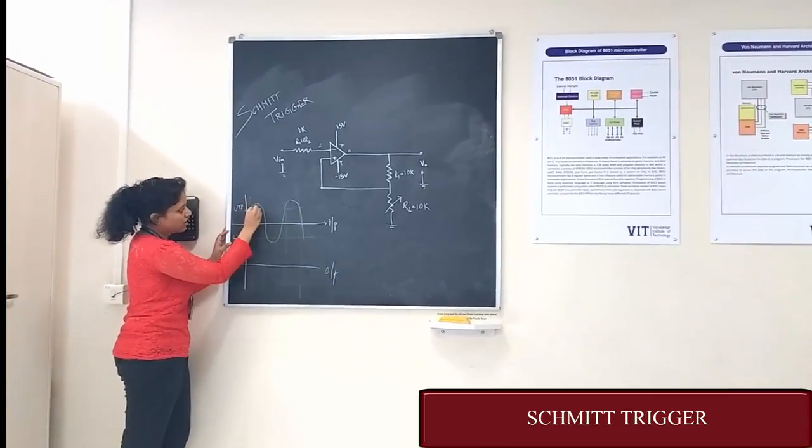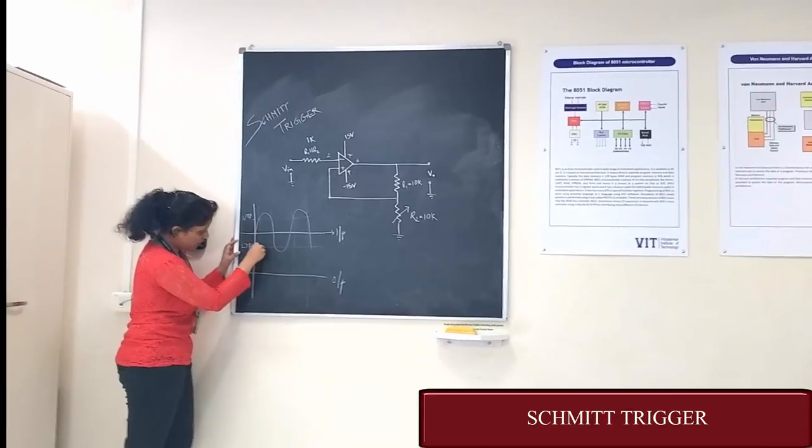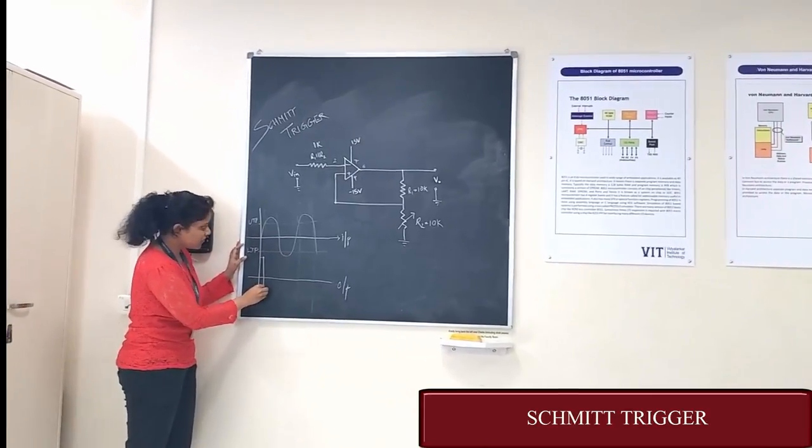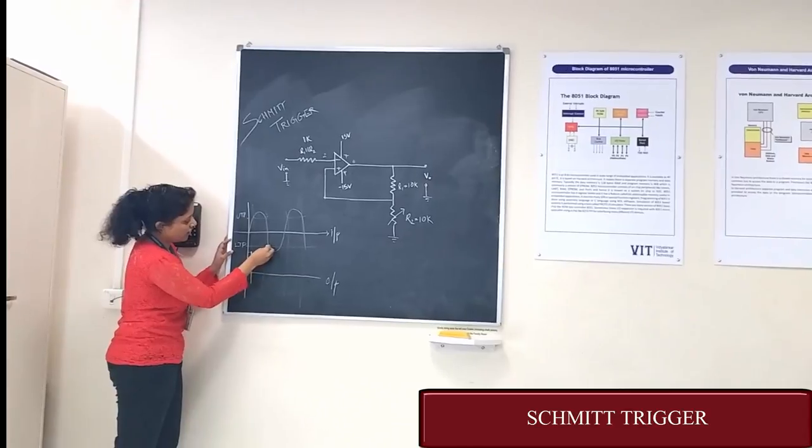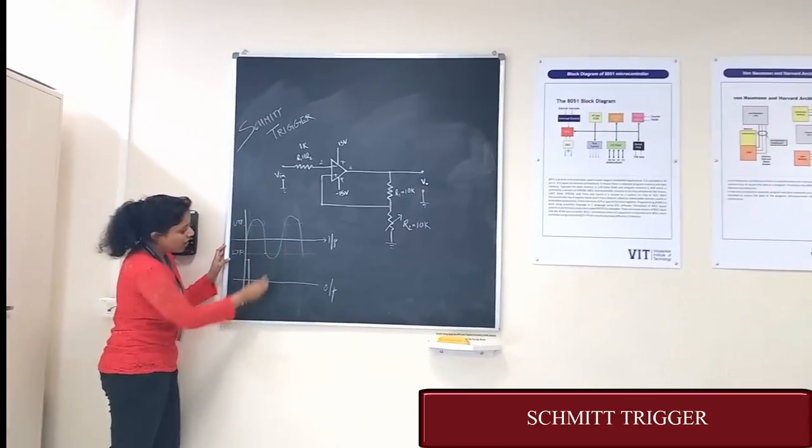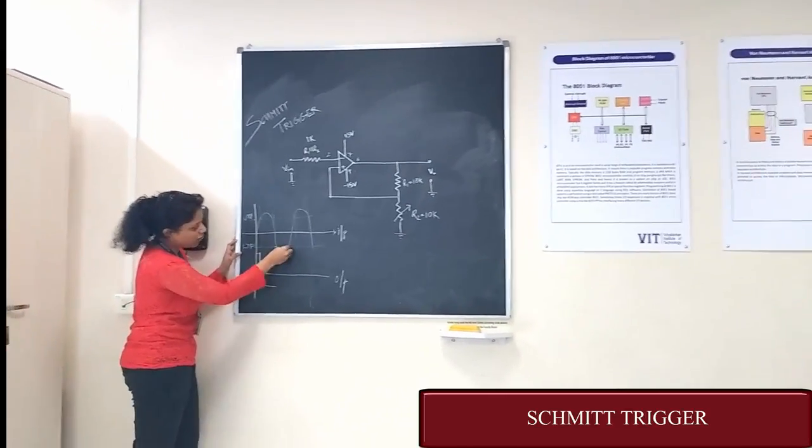If the voltage goes above this point, then it goes down and it continues till it reaches lower trigger point.